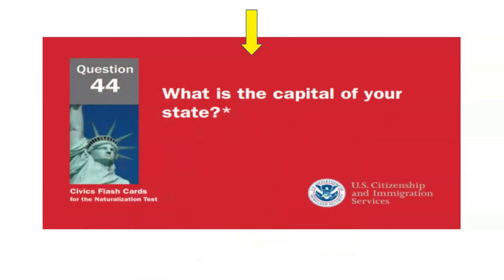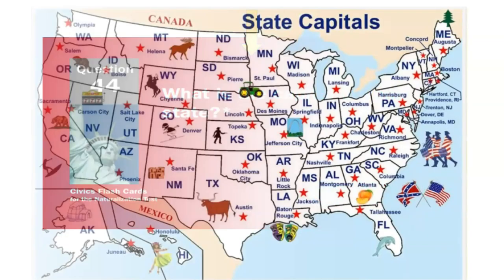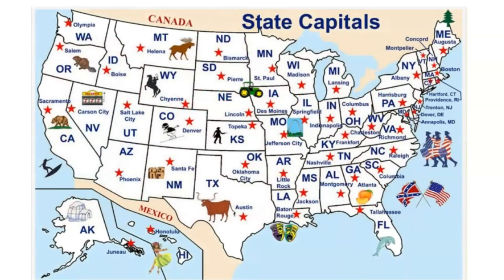What is the capital of your state? In front of you, you have a map with all 50 states. Please locate your state and you will find the answer — the capital of the state is next to the star. For example, if you live in California, the capital is Sacramento. If you live in Florida, the capital is Tallahassee. Please locate your state and you will find the answer there.